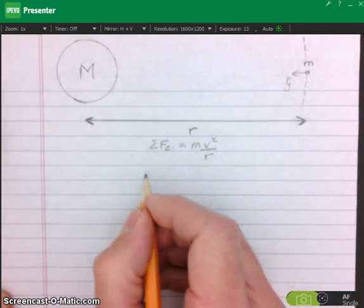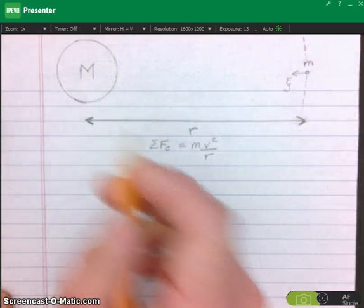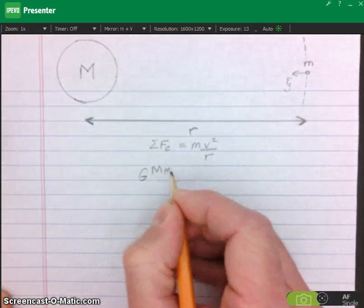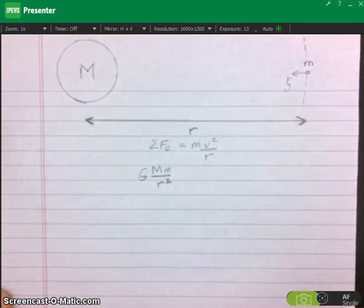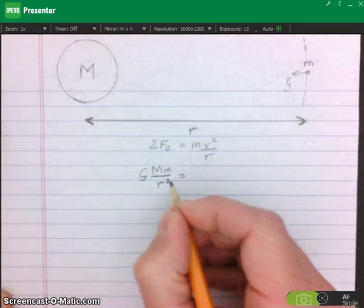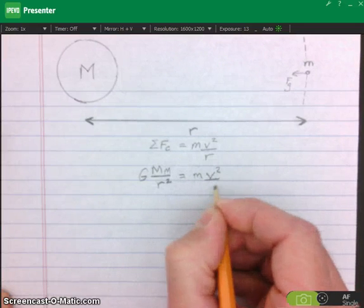And the gravitational force is as big as G times the mass of the large object times the mass of the small object divided by the radial distance between the two of them squared. That's the net force. That's equal to m V squared over R.